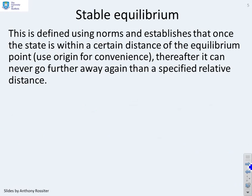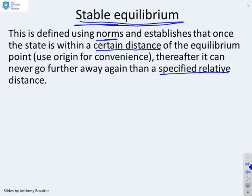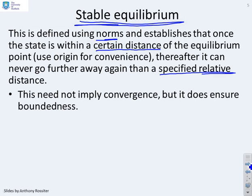Stable equilibrium is a particular definition that students should be aware of. It's defined using norms and establishes that once the state is within a certain distance of the equilibrium point, thereafter it can never go further away again than another specified relative distance. You'll notice that this does not imply convergence, but what it does imply is boundedness, because we've said it can only go a certain distance away from this equilibrium point.